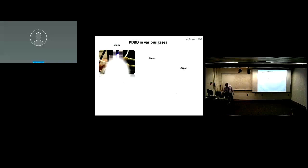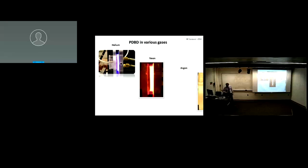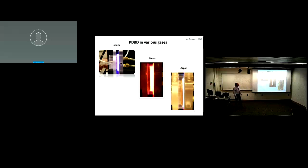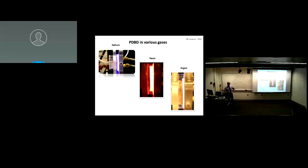Here are pictures to show the discharge can be made in helium, neon, or argon — each gas has different excitations and emits different wavelengths, so they all have different colors. Neon is always a little redder. In the lab it was really spectacular to see.